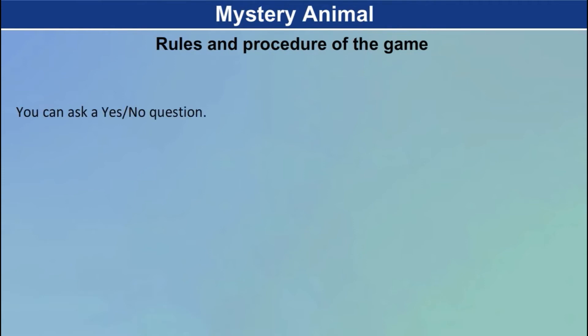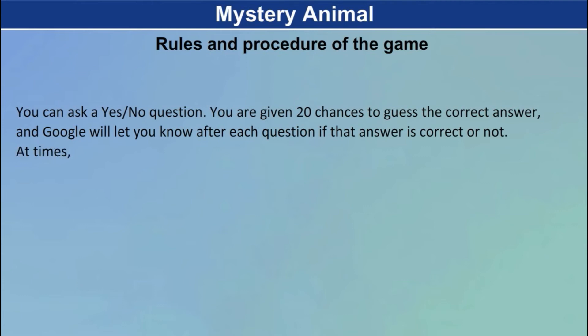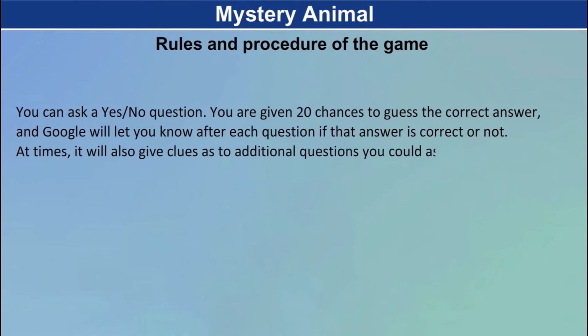Rules and Procedure of the Game: You can ask a yes or no question. You are given 20 chances to guess the correct answer and Google will let you know after each question if that answer is correct or not. At times, it will also give clues as to additional questions you could ask.